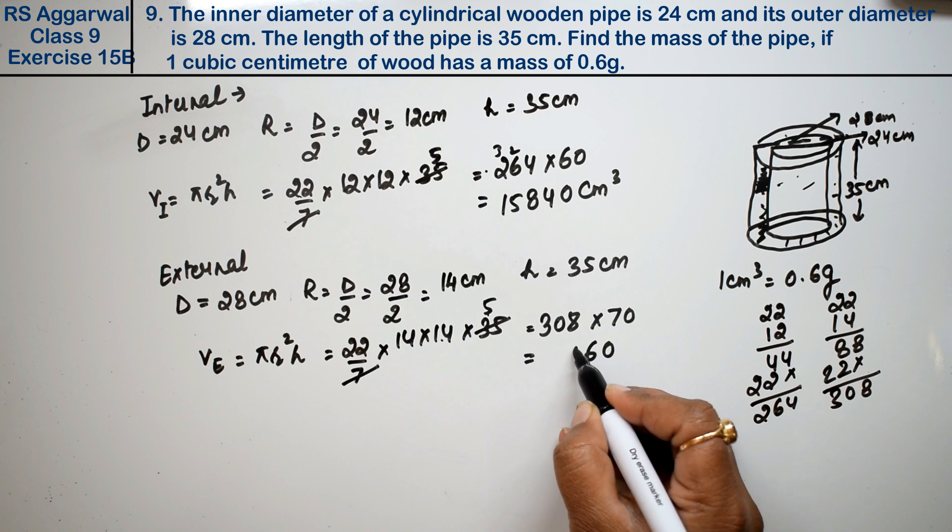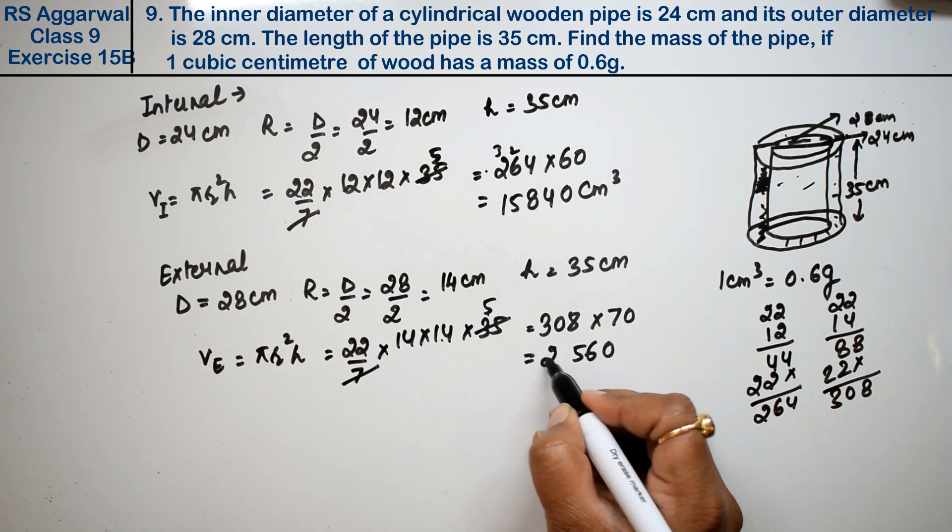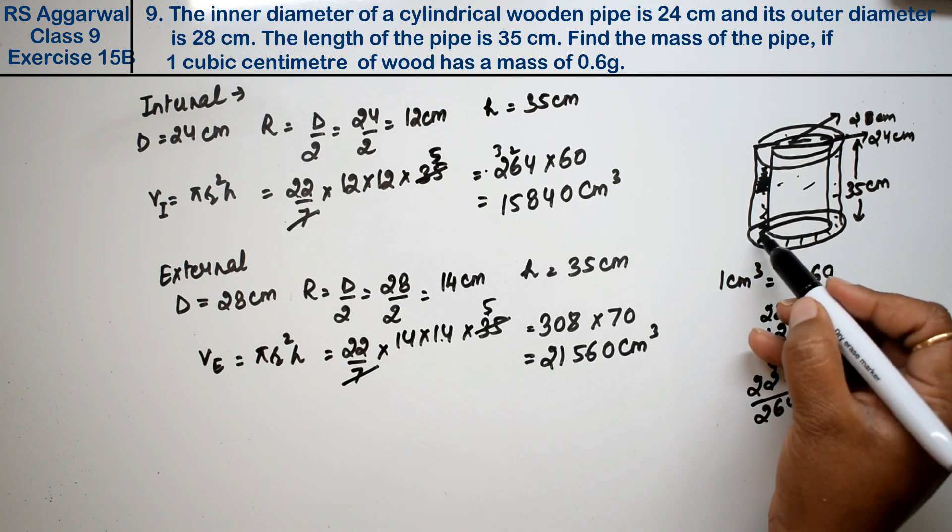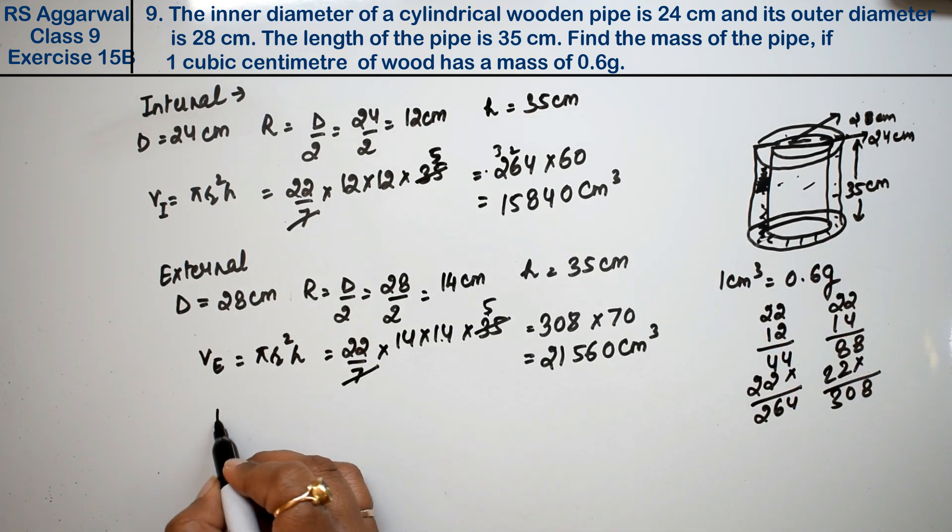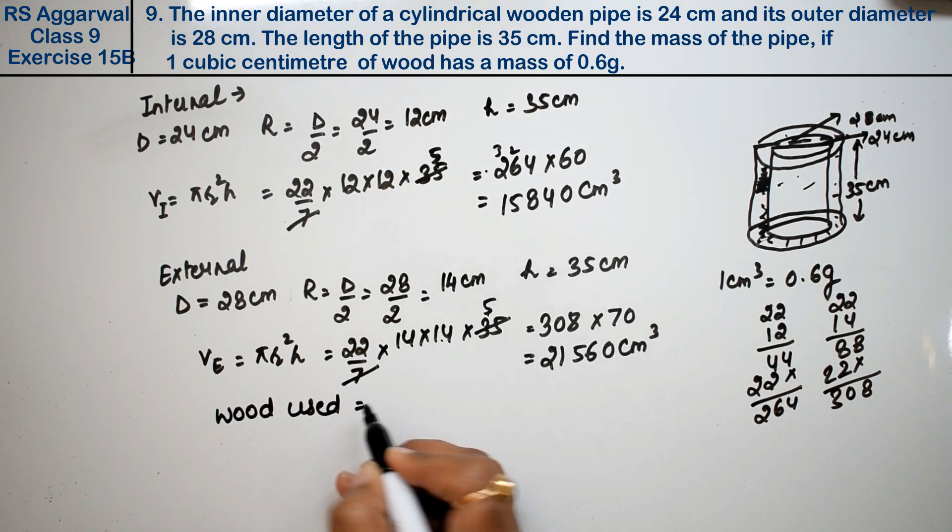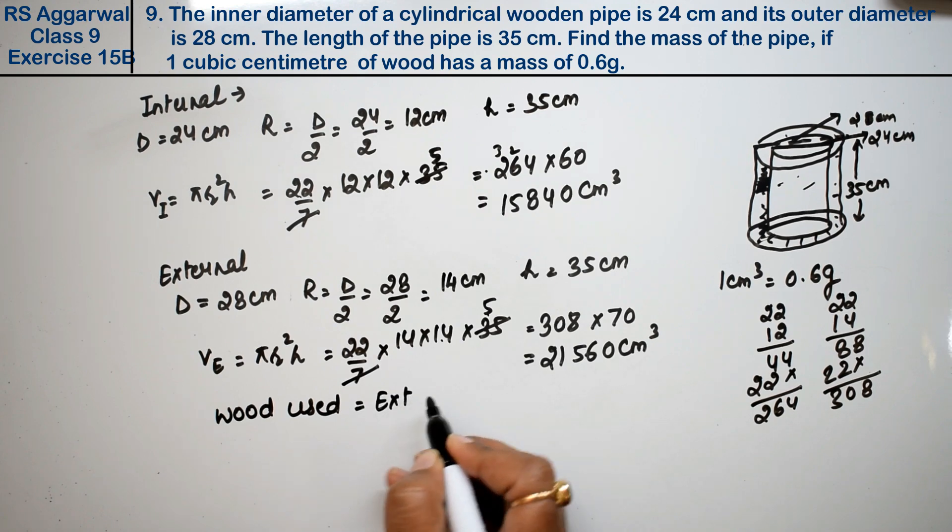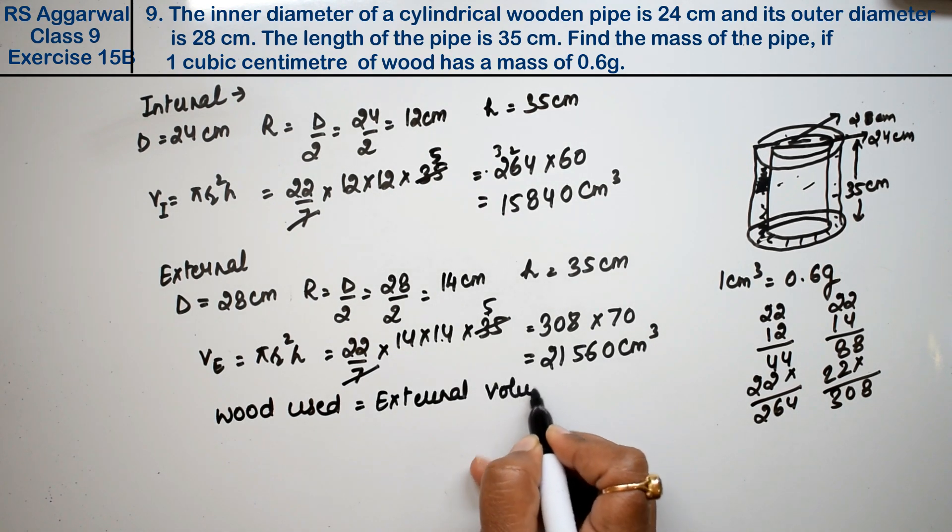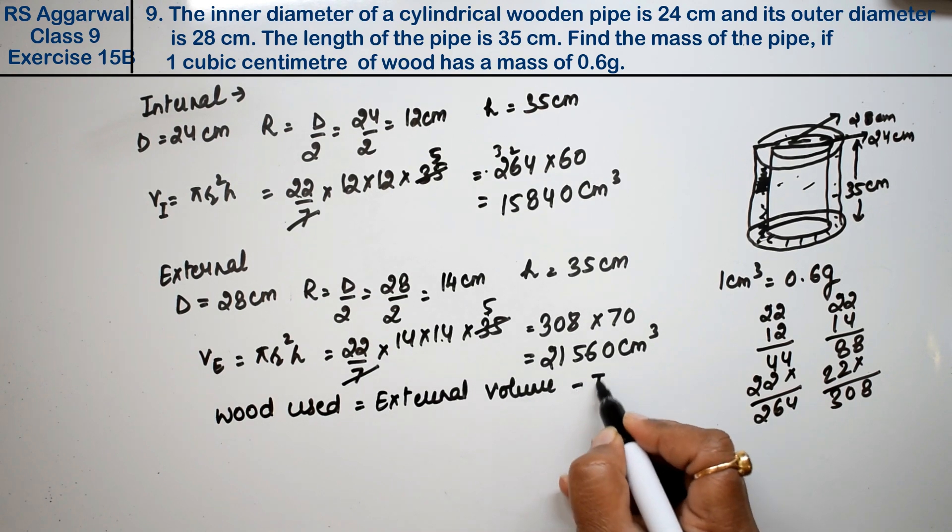Who will we multiply? We'll do 22 into 14. 4 twos are 8, 4 twos are 8, 2 and 2, so this equals 308. Into 70, and 308 becomes 21,560 cm cube. Now we need to find the wood used.